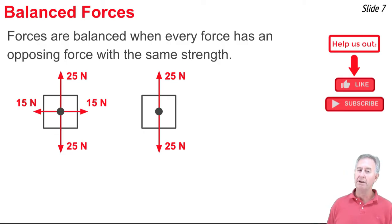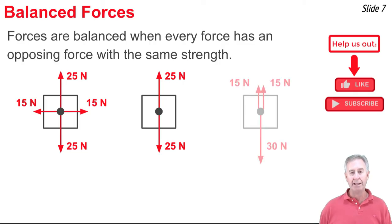Here's another instance of 25 newtons up and 25 newtons down, just two forces, but they happen to be balanced. And here's an example of a situation with three forces, one which is 30 newtons down, and two more that are upwards of 15 newtons each. When added together, these two 15 newton up forces balance out the one 30 newton down force.